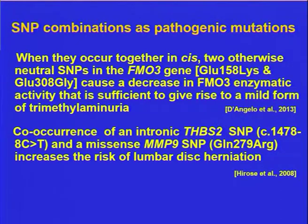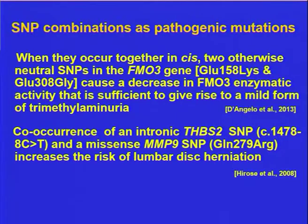I suspect that quite a few examples of common disease may be inherited in a similar manner, but by their very nature these types of disease mechanism are difficult to spot and difficult to research — which is probably why they are as yet few in number. This also explains why there are disease-associated variants in HGMD which also occur in the wider population.